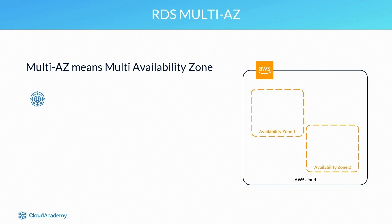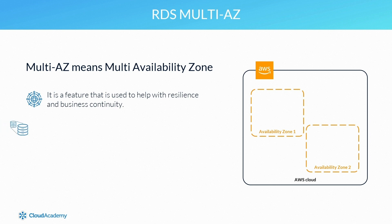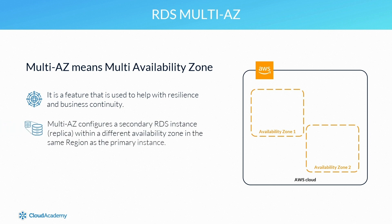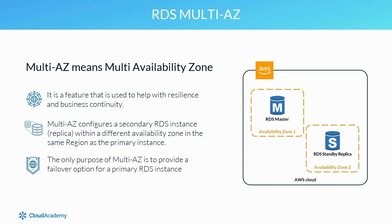When multi-AZ is configured, a secondary RDS instance known as a replica is deployed within a different availability zone within the same region as the primary instance. That is its single and only purpose — to provide a failover option for a primary RDS instance.